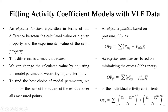In this lecture, we will fit activity coefficient models with given VLE data. To do so, we need to define an objective function written in terms of the difference between the calculated value of a given property and the experimental value. Three types of objective functions can be used: one in terms of pressure, one in terms of excess free energy, and one in terms of activity coefficients. This difference is termed as residual, and we minimize the sum of squares of the residuals by adjusting the model parameter.